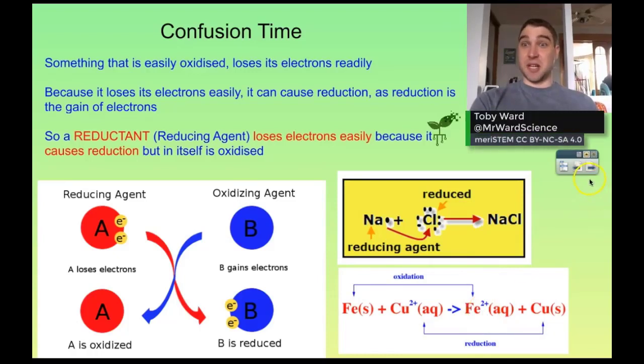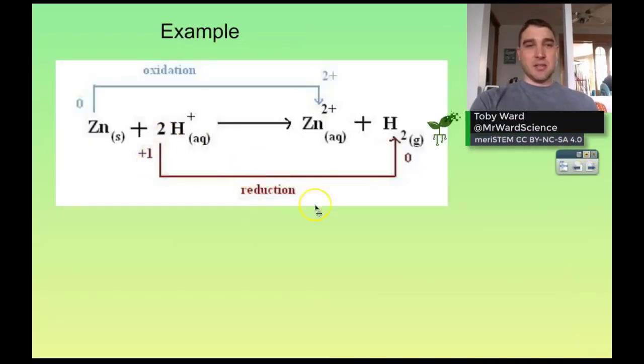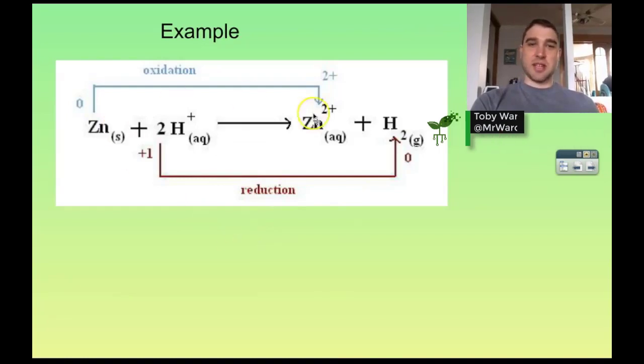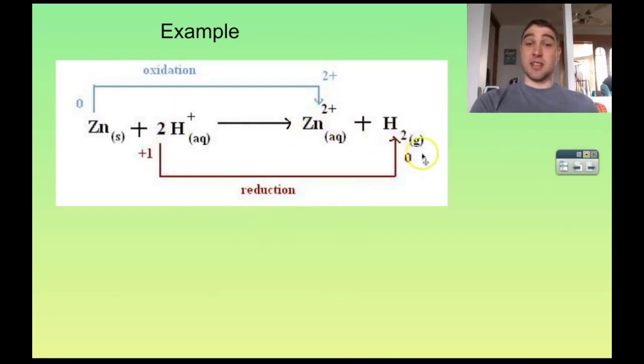Let's have a look at another example. Here we have an oxidation-reduction reaction occurring again at the same time. We've got zinc reacting with hydrogen ions to produce zinc ions and hydrogen gas.